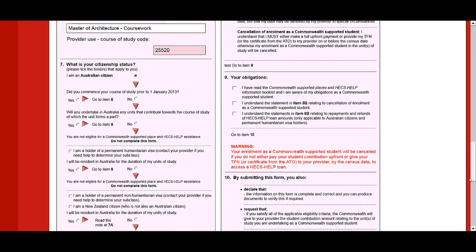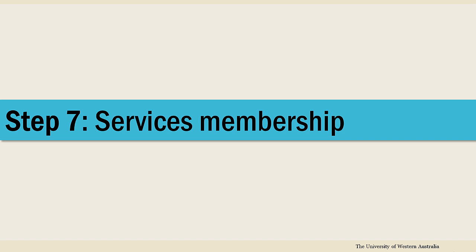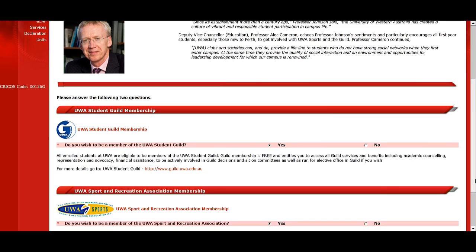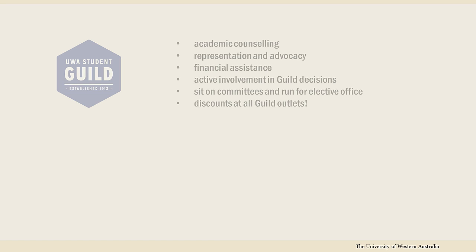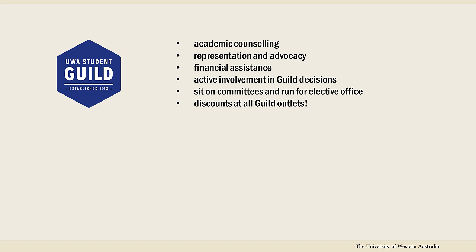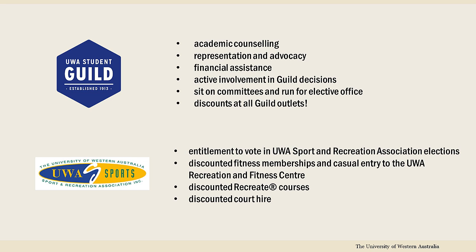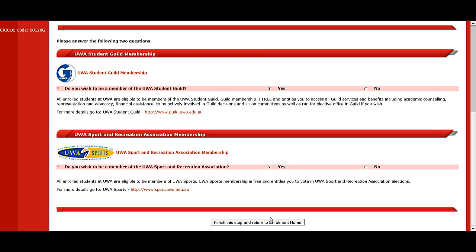For domestic Commonwealth supported students, this step is mandatory. Step 7 gives you a message from the Vice-Chancellor and the chance to select the memberships you'd like. Membership of the UWA Student Guild is free and entitles you to access a wide range of services, including academic counselling, representation and advocacy, and financial assistance, to be actively involved in guild decisions and sit on committees, as well as run for elective office in the guild. You can also get discounts at all guild outlets. Membership of UWA Sports is also free and entitles you to vote in UWA Sport and Recreation Association elections. Check out the Guild and UWA Sports websites for more information.